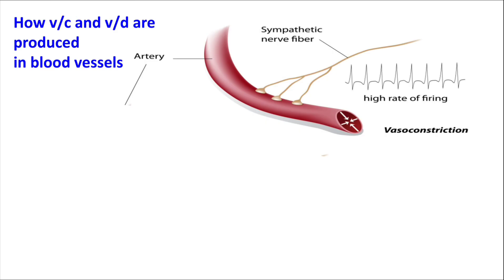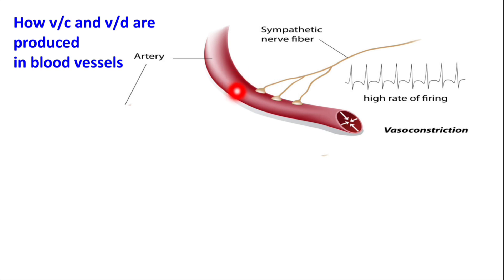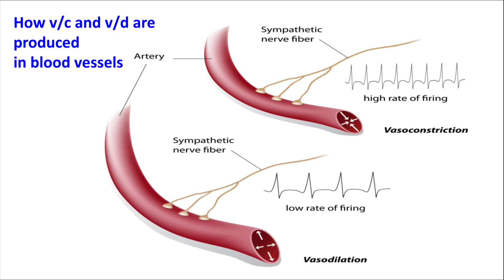The postganglionic sympathetic fibers reach the heart and also reach various blood vessels in the body. When there is an increased rate of firing of the vasoconstrictor area, these sympathetic impulses cause vasoconstriction. Vasoconstriction means the smooth muscle in the wall of blood vessels, especially arteries, is contracted, and due to this contraction the radius or size of the blood vessel is reduced — the vessel is constricted.